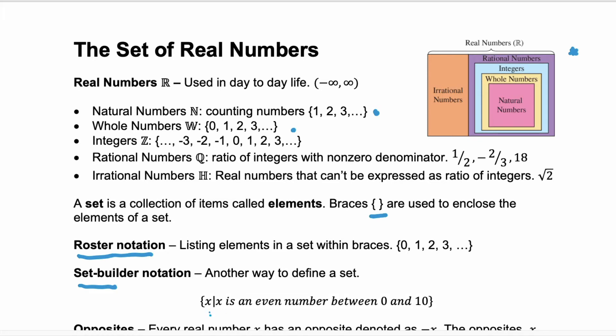And then there's what's called set builder notation which uses braces again but it identifies your variable. So here it says X. Then it has this vertical bar which represents such that and then after the vertical bar it tells you the restrictions. So this would be read X such that X is an even number between 0 and 10.